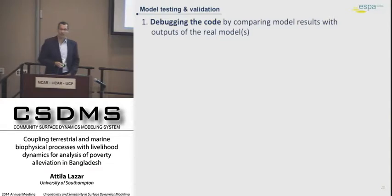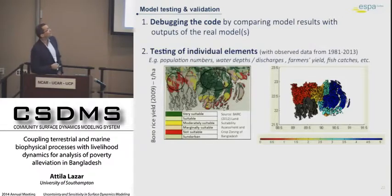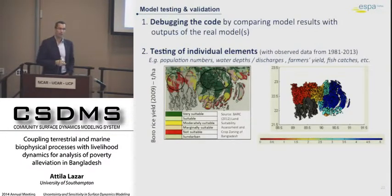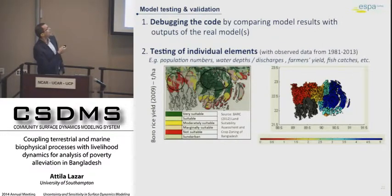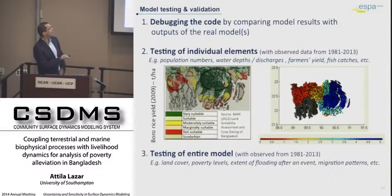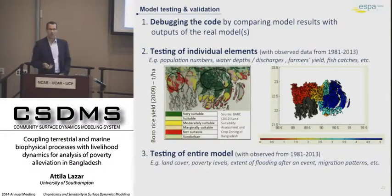The first and most obvious step is checking the code and then checking each model element separately. For productivity tools like the agriculture crop productivity tool, we check against published land suitability maps and farmer yield data in statistical yearbooks, checking if results resemble the observed pattern. If this is done for all the elements, we move on to testing the entire model, checking more global variables like land cover changes, poverty levels, and inundation as a result of historical flood events. These testings are on the historical period.